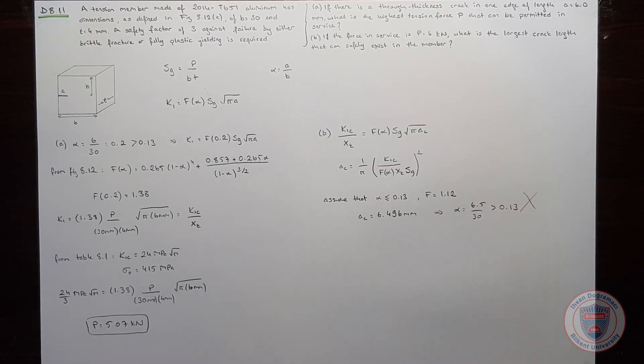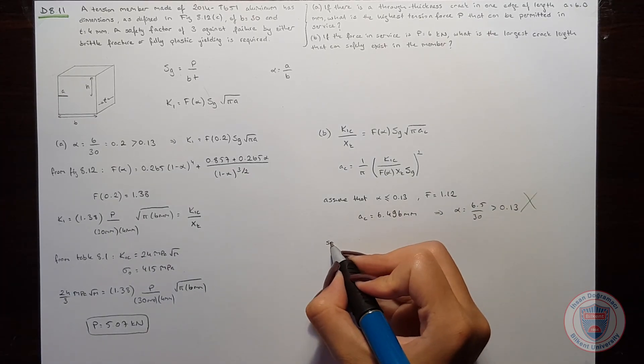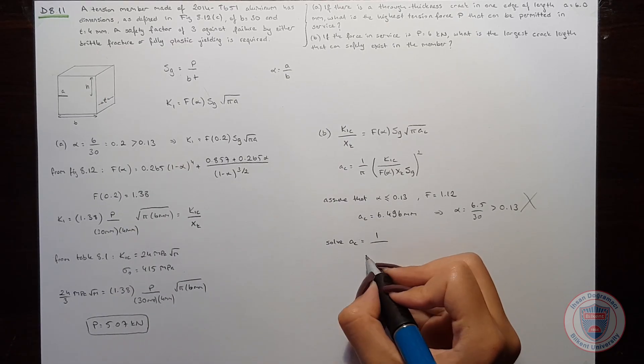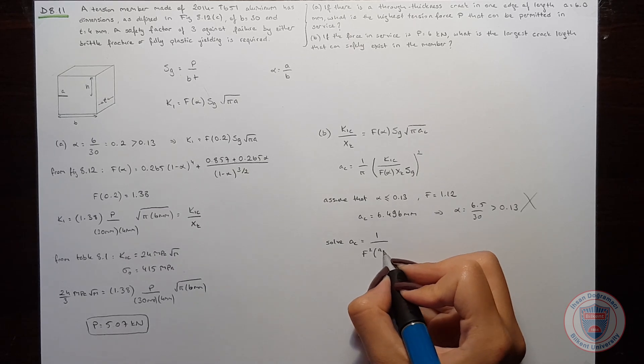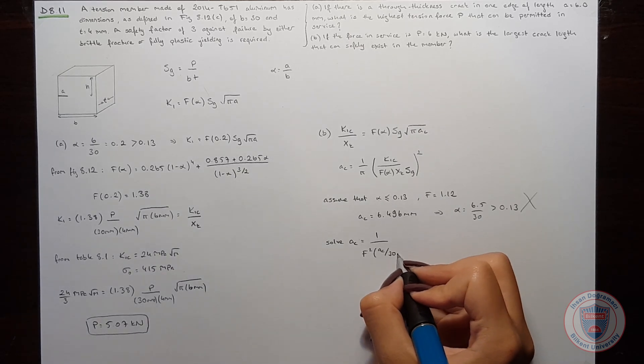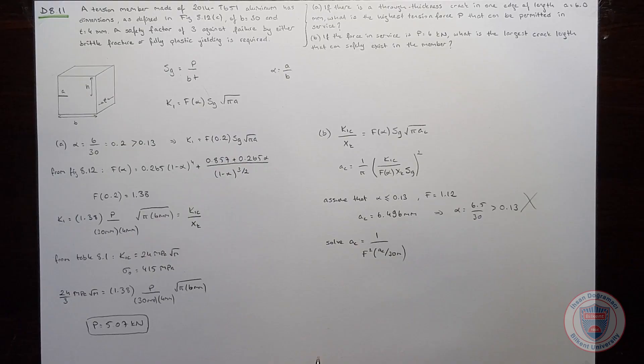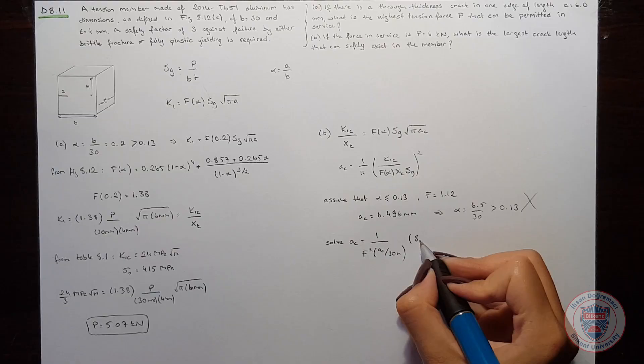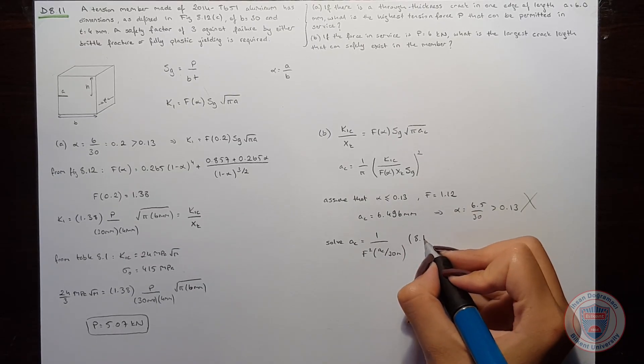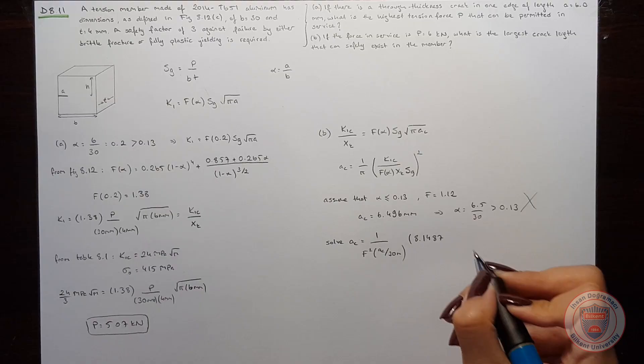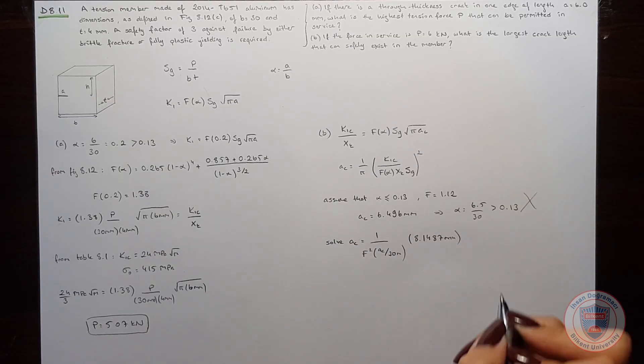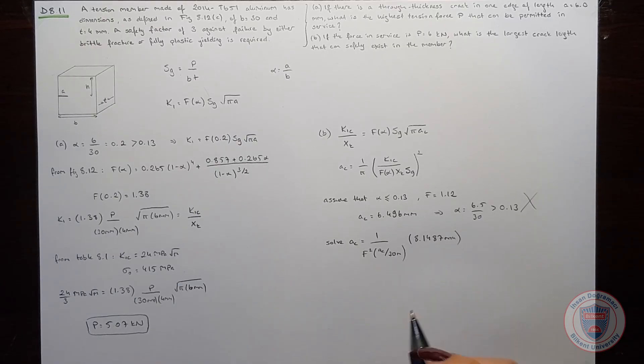So we can't make such an assumption. So we have to solve a_c equal to 1 over form factor squared times the rest of the equation. And when we solve this equation, we will get the critical crack length.